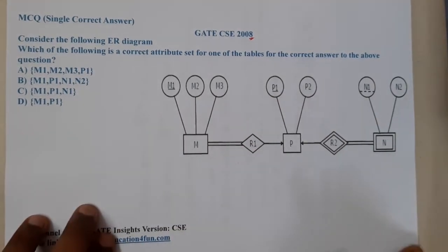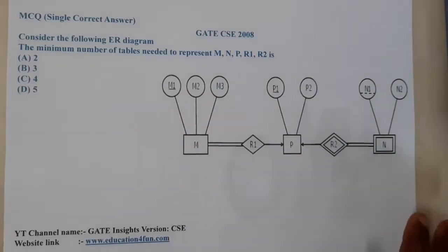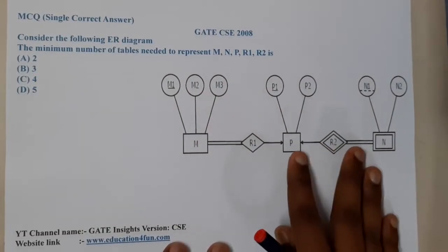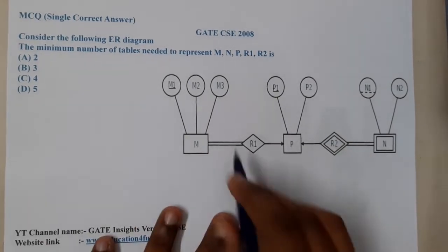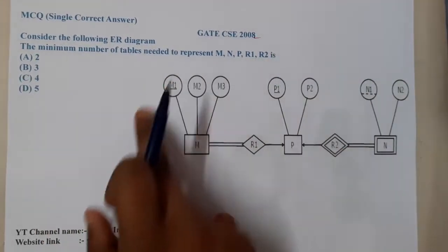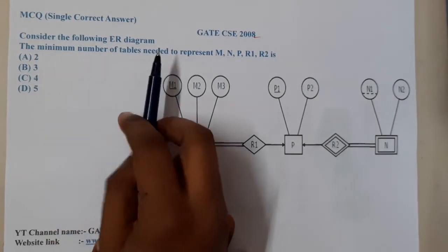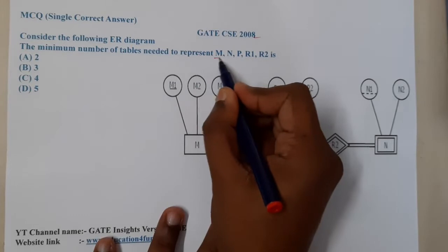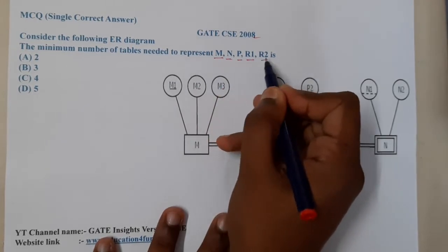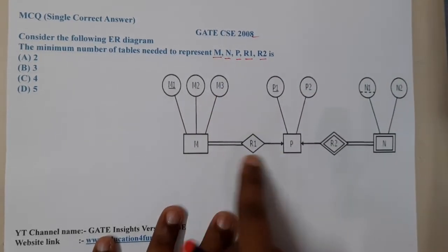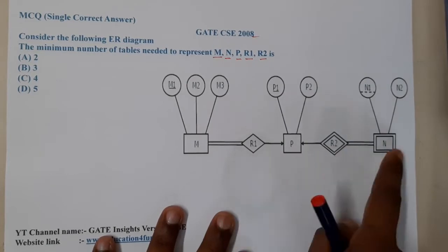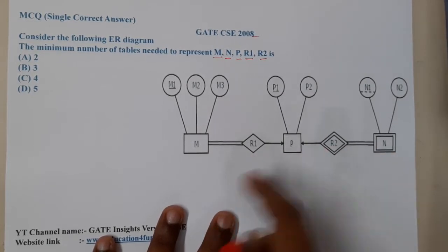Is this a continuation question? Because I think this question doesn't make that much sense. Yeah, this is a continuation question, so first we shall solve this, then we'll move on to that. This also belongs to the same problem. They give an ER diagram and are saying the minimum number of tables needed to represent M, N, P, R1, R2.